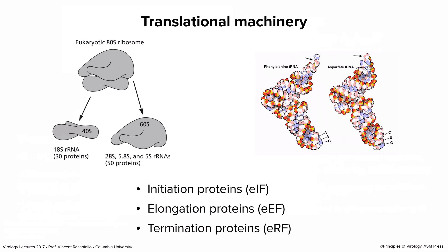The translation machinery in eukaryotes is the 80S ribosome, composed of 40S and 60S subunits made up of ribosomal RNAs and proteins. The 40S subunit contains 18S rRNA; the large subunit contains 28S, 5S, and 5.8S rRNAs, with about 80 proteins total. The proteins have a secondary role—it's actually the RNA that catalyzes protein synthesis. You can take away most of the proteins and the RNA will still make a protein, which is a tip of the hat to the RNA world.